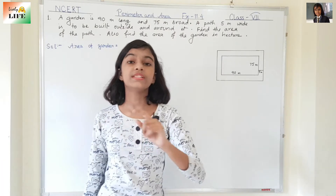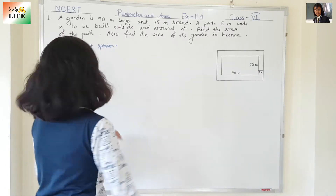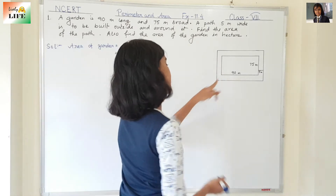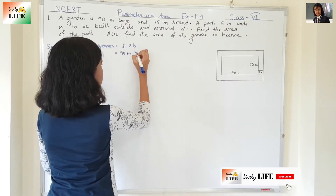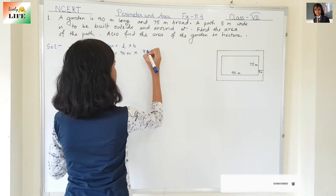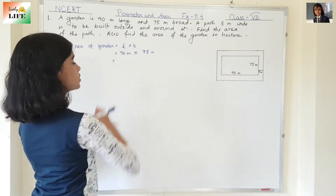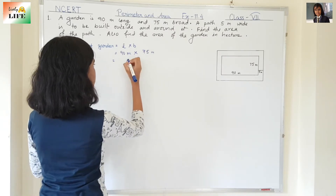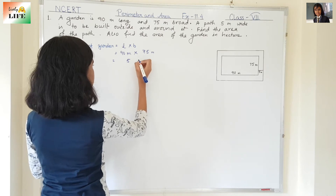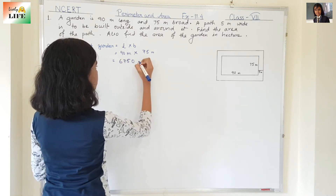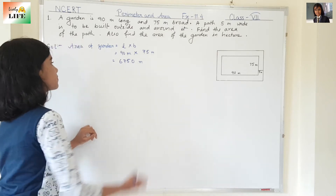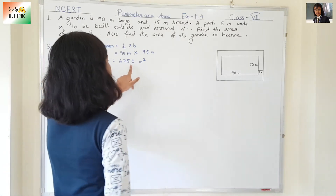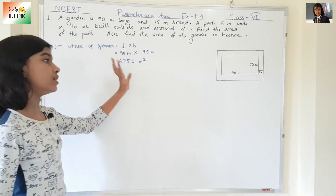The area of the garden is a rectangle. The formula for area of a rectangle is length into breadth. The length is 90 meter and the breadth is 75 meter. So 90 into 75 gives us 6,750 meter square. So 6,750 meter square is the area of the garden.